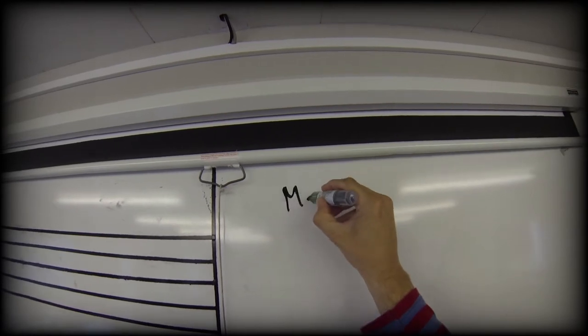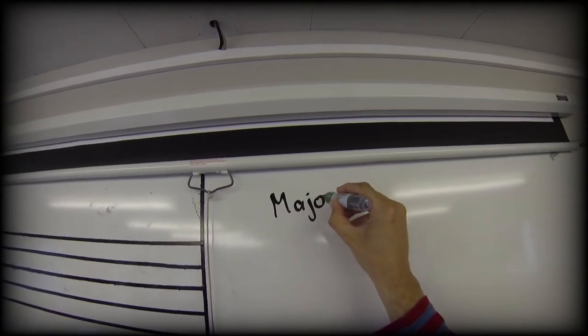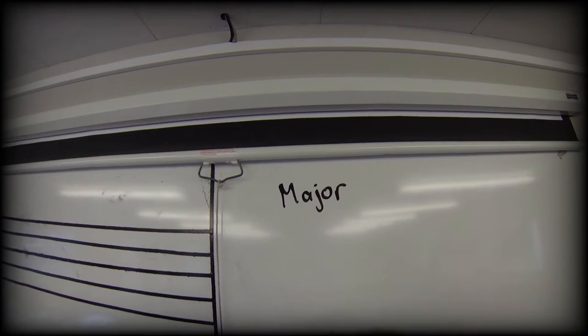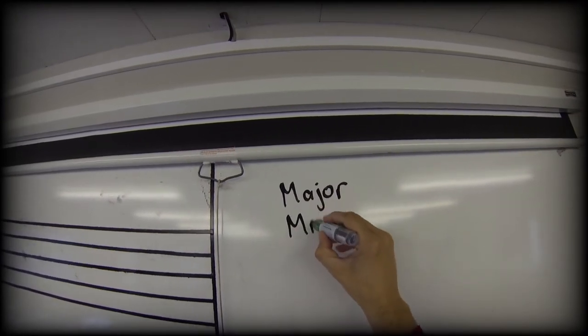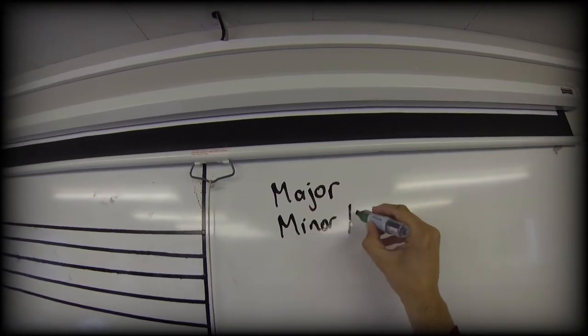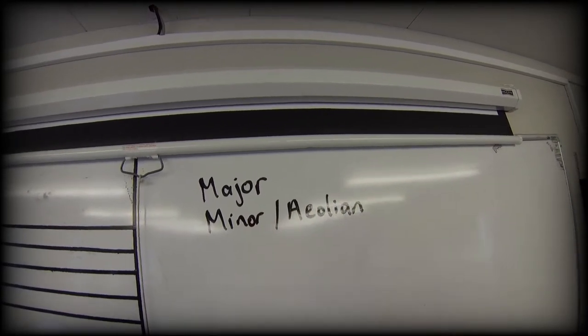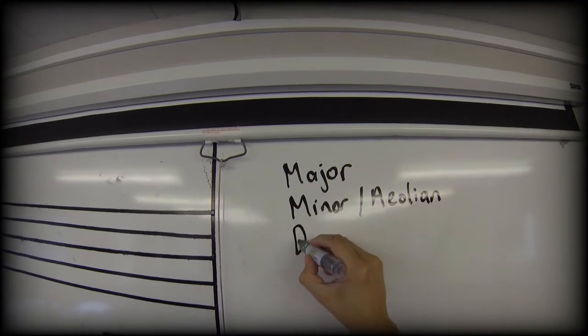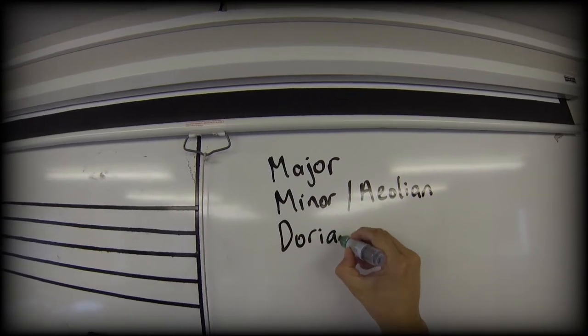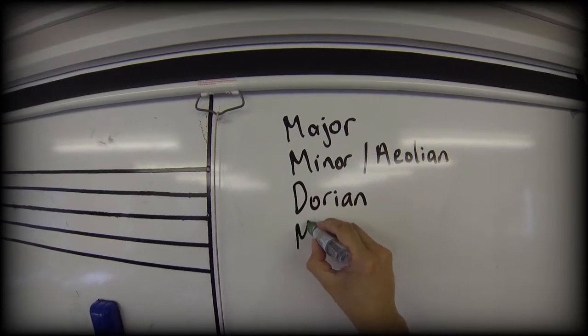And they are these ones: the major, the minor also called the aeolian, the dorian, and the mixolydian.